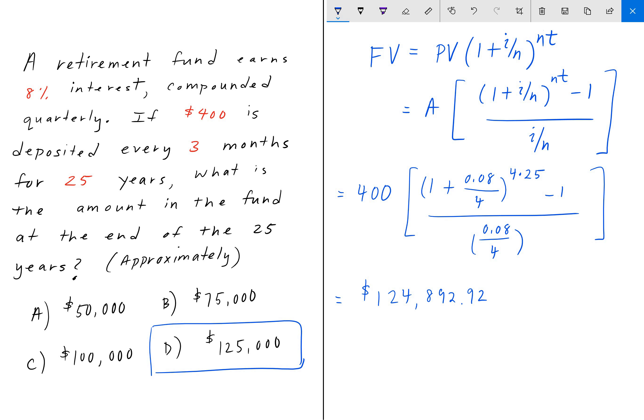What that says is, if I were to contribute $400 every three months for 25 years, and that money that I contributed to this retirement account compounded at an 8% interest, and it compounded quarterly, then I would have about $125,000 in that account at the end of the 25 years.